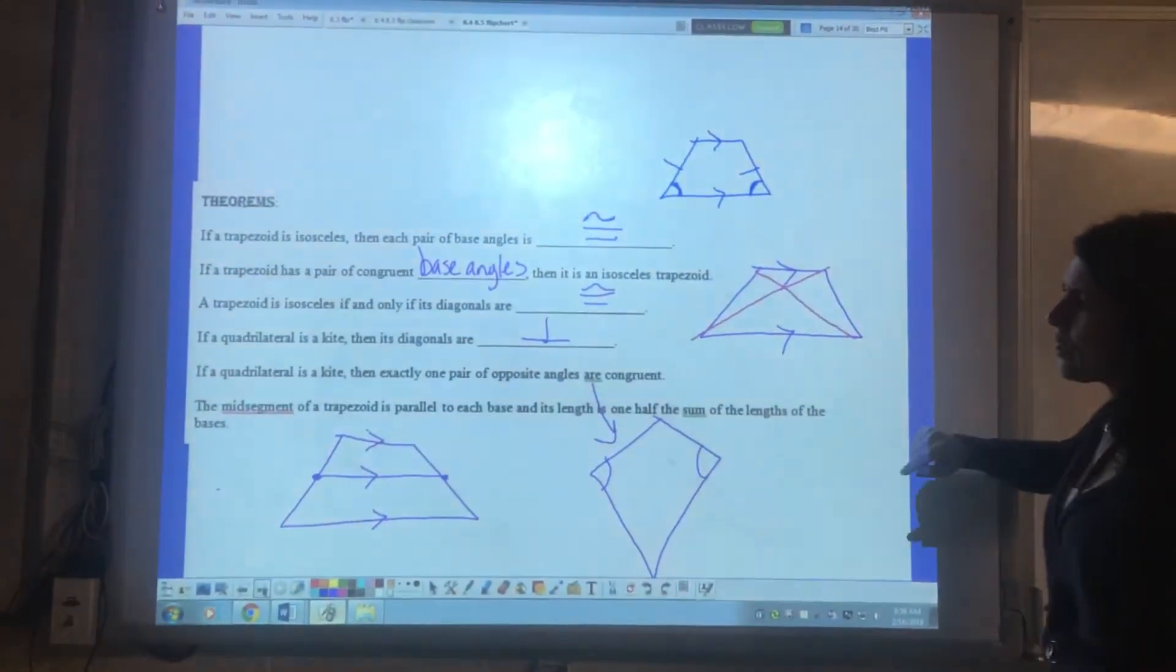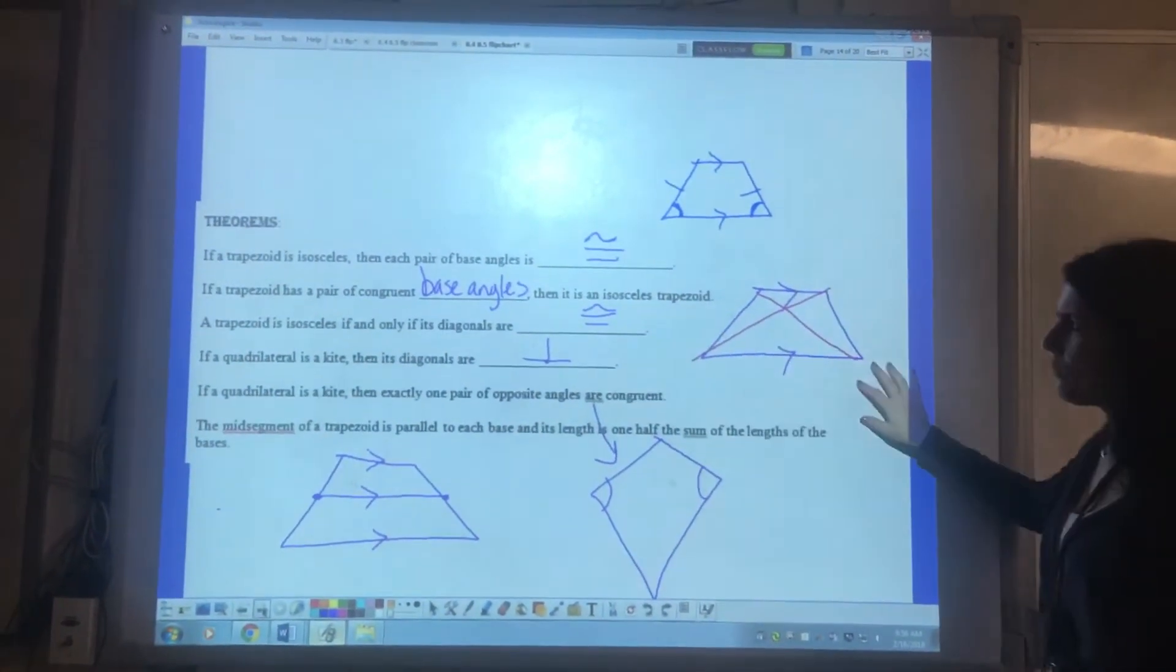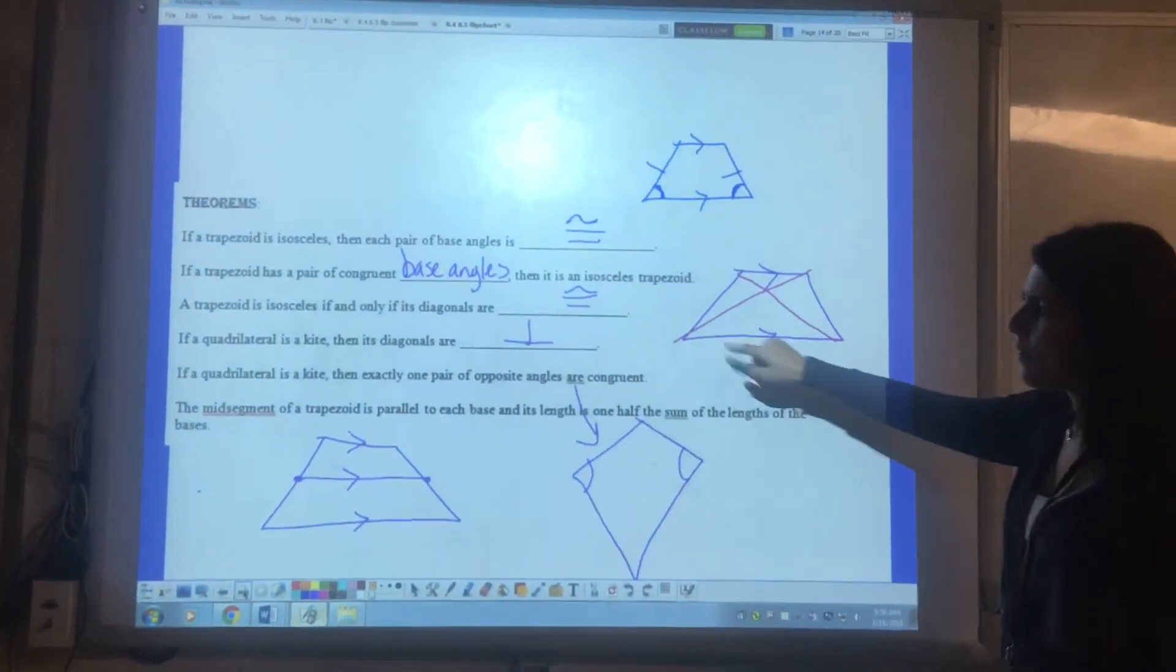Isosceles trapezoid. The diagonals are congruent. Well here's my isosceles trapezoid. These pink lines are the diagonals and they're the same length.